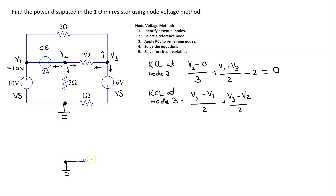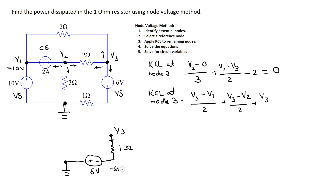For the last branch current, since we cannot apply Ohm's law directly to the voltage source, we use a technique: interchange the position of the voltage source and the resistor. Since they are in series, we can do this, and now we can apply Ohm's law to the resistor. This gives voltage V3 minus the voltage on the other side. Because the voltage source is connected between ground and that point, the voltage there is minus 6 volts. So the expression is V3 minus (minus 6) over 1, equal to 0.